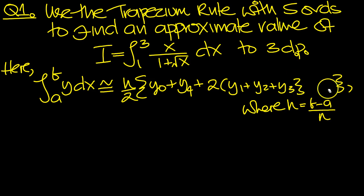And now we can also work out h. h is b minus a, 3 minus 1 over n. So 3 minus 1 is 2. n is 4, so h is a half. And the first part is h over 2, so a half over 2 is a quarter. So let's put that in at the outset then. It's 1 over 4.